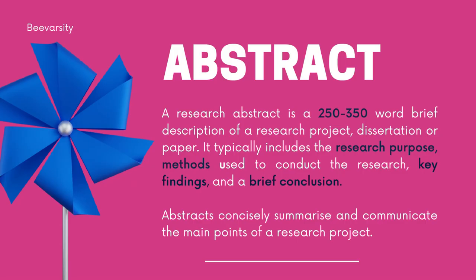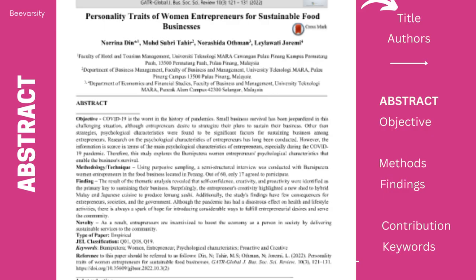Now let's go into the abstract. What is an abstract? An abstract is a summary that captures everything your dissertation is about. Keep it to around 250 words — a brief description that covers the purpose of the research, the methods used, the key findings, and a brief conclusion. Look at any journal and you will see how they write it. They put the objectives first, then the methods, then the findings and contribution to knowledge, and finally the keywords.